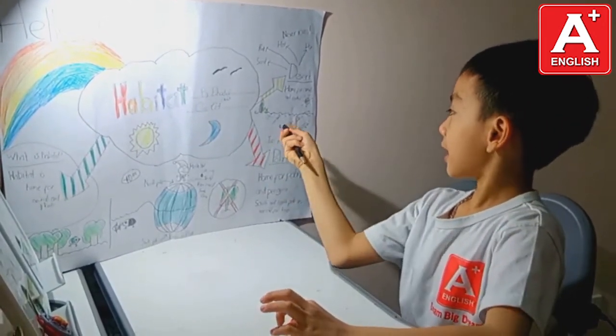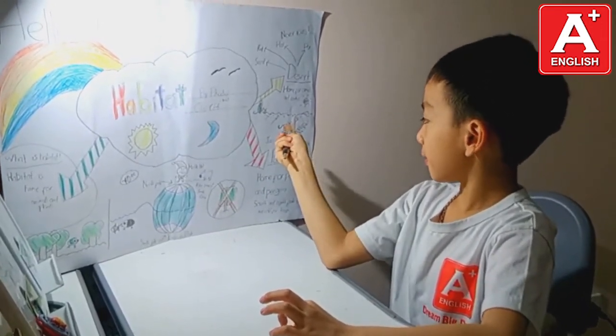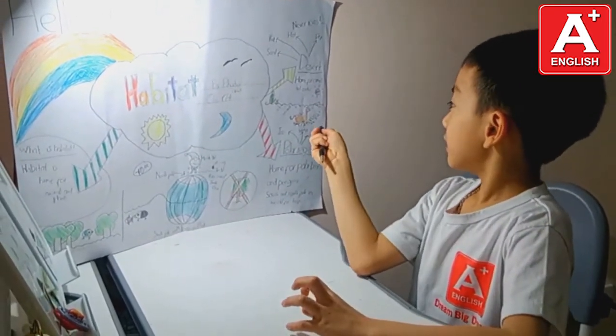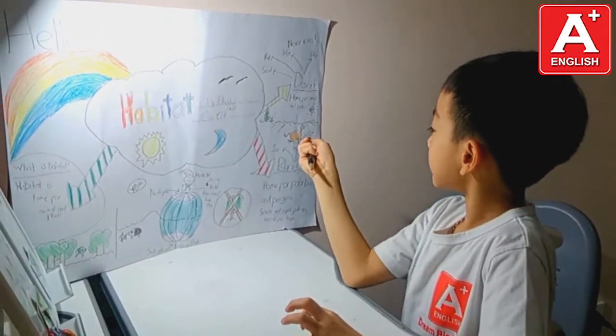Only cactus and camels can live there. They can keep water inside their body. In the desert, the temperature is more than 40 degrees Celsius.